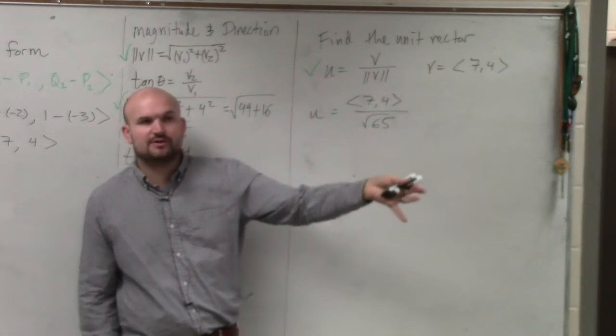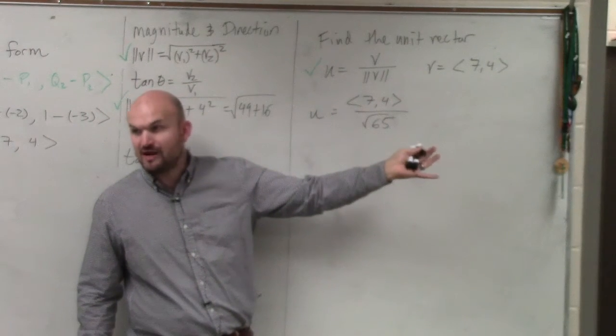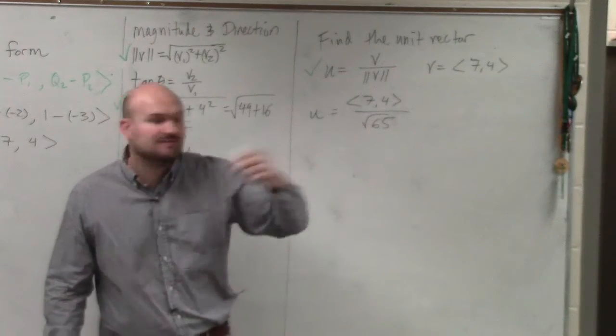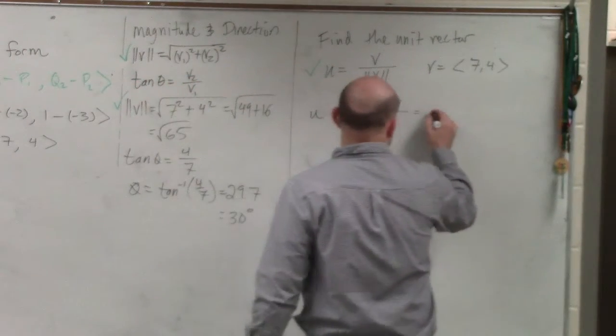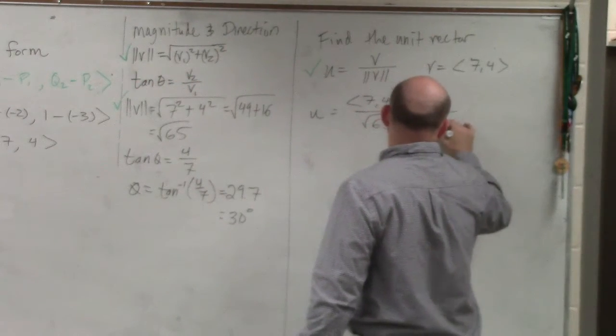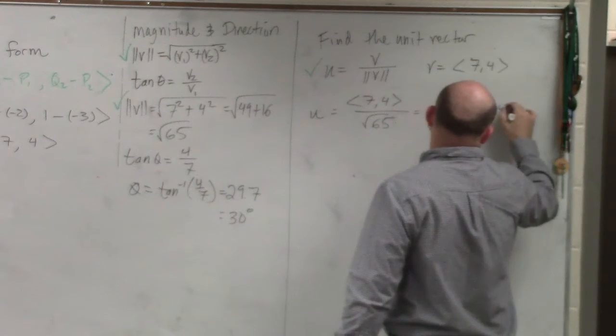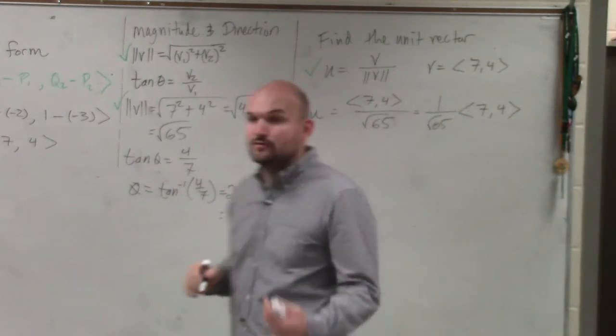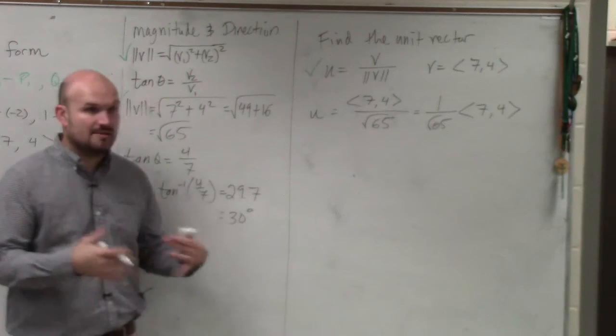So you guys would agree dividing is the same thing as multiplying by a fraction, right? Dividing by 2 is the same thing as multiplying by 1 half. So in technical terms, I could rewrite this as 1 over square root of 65 times 7 comma 4.